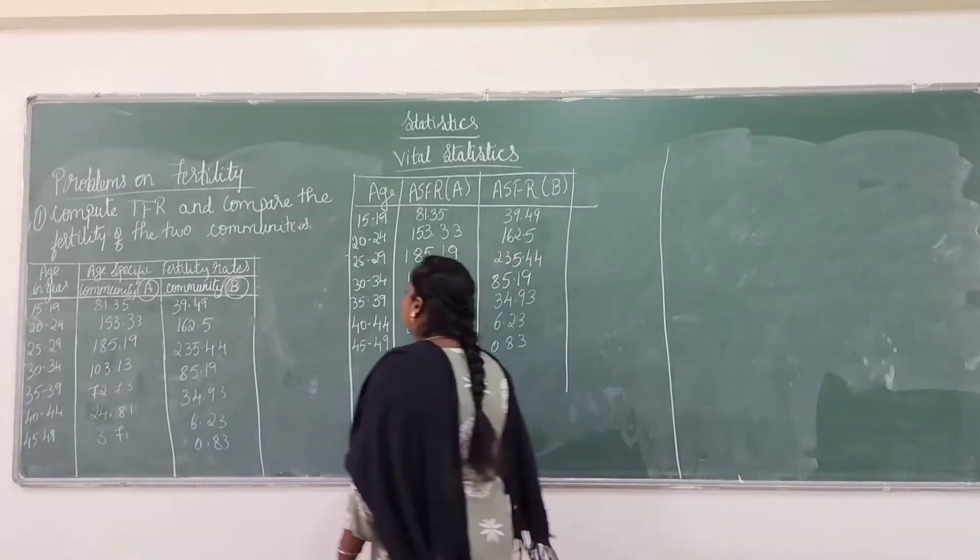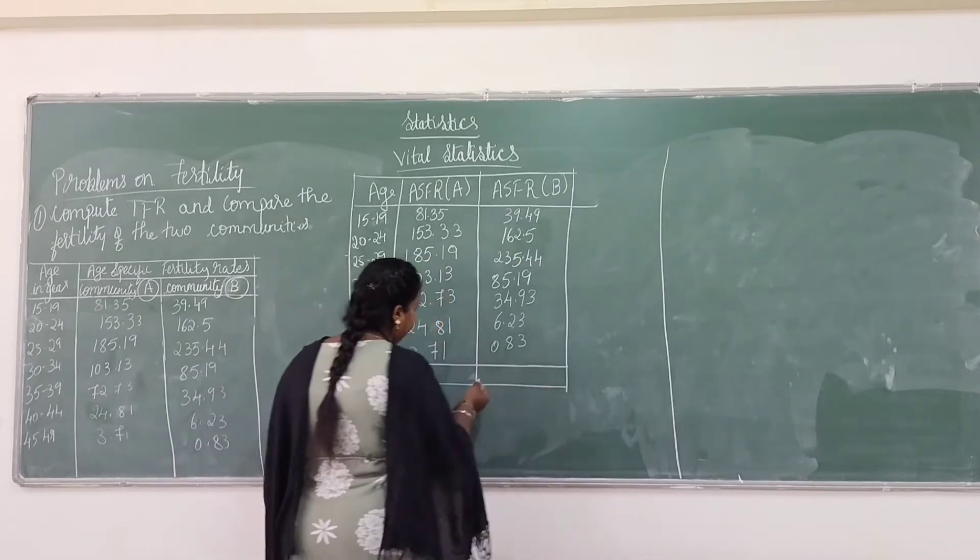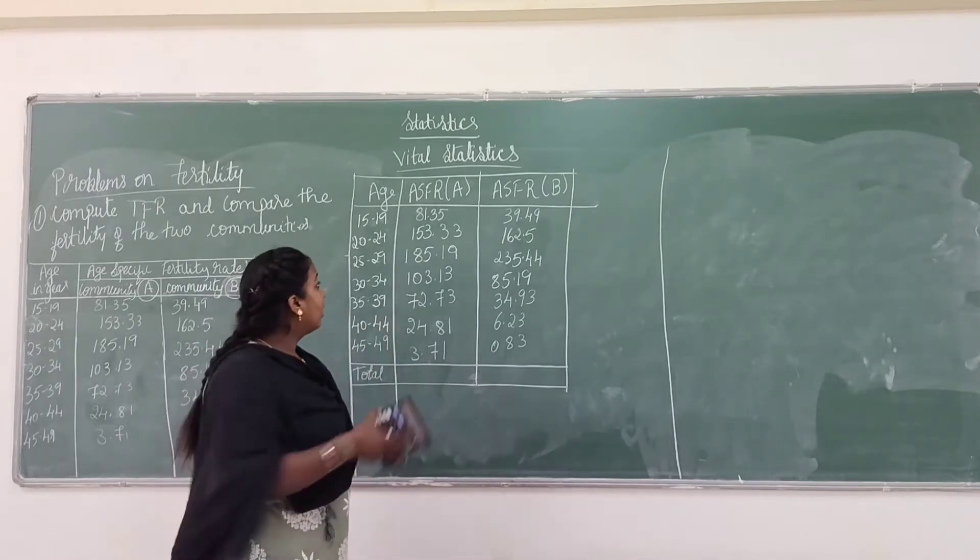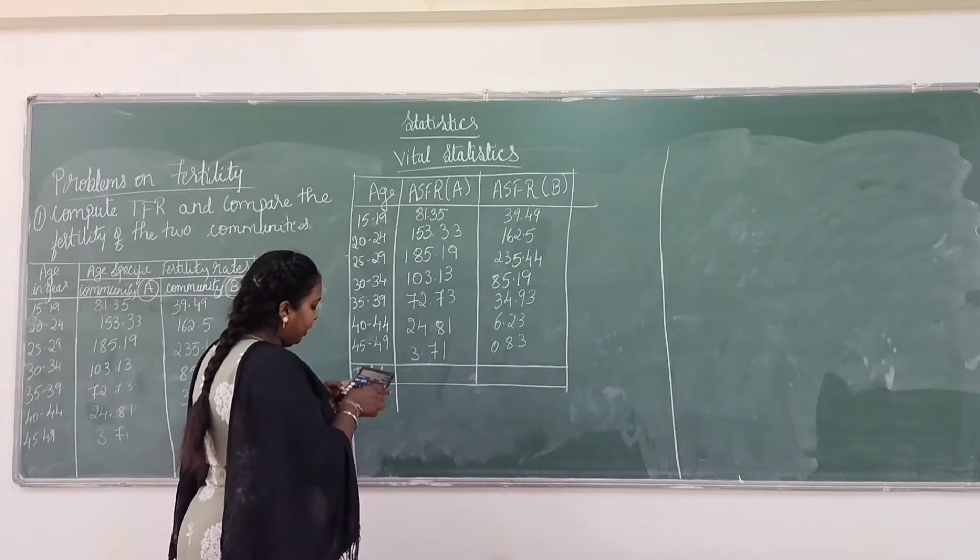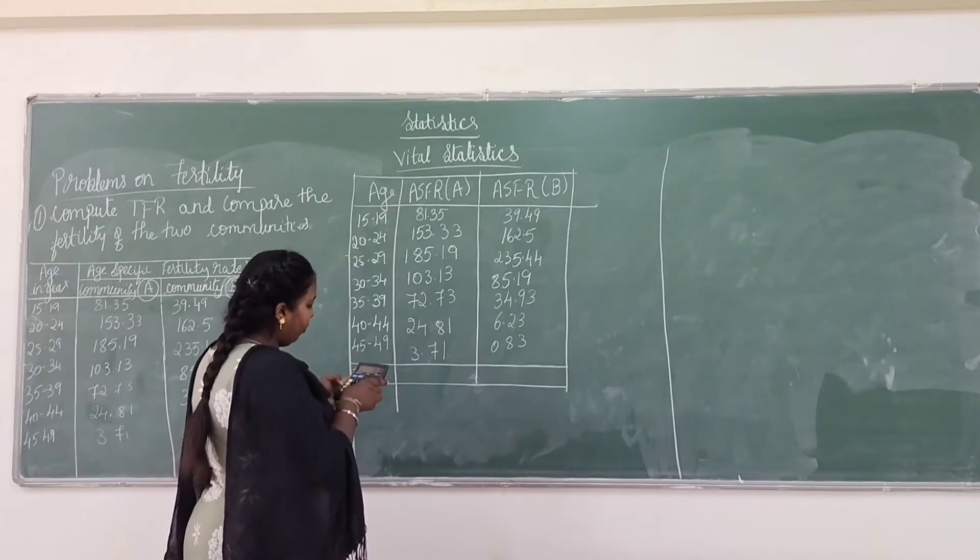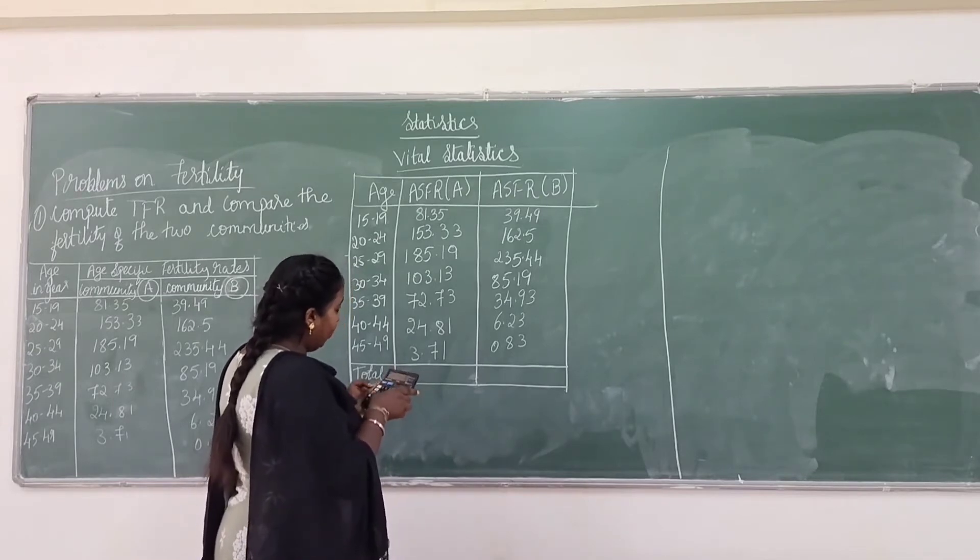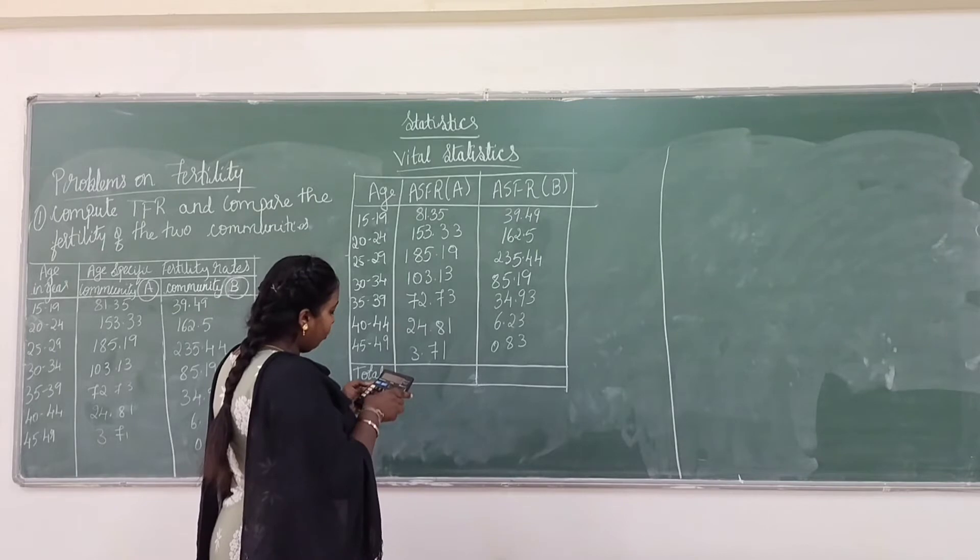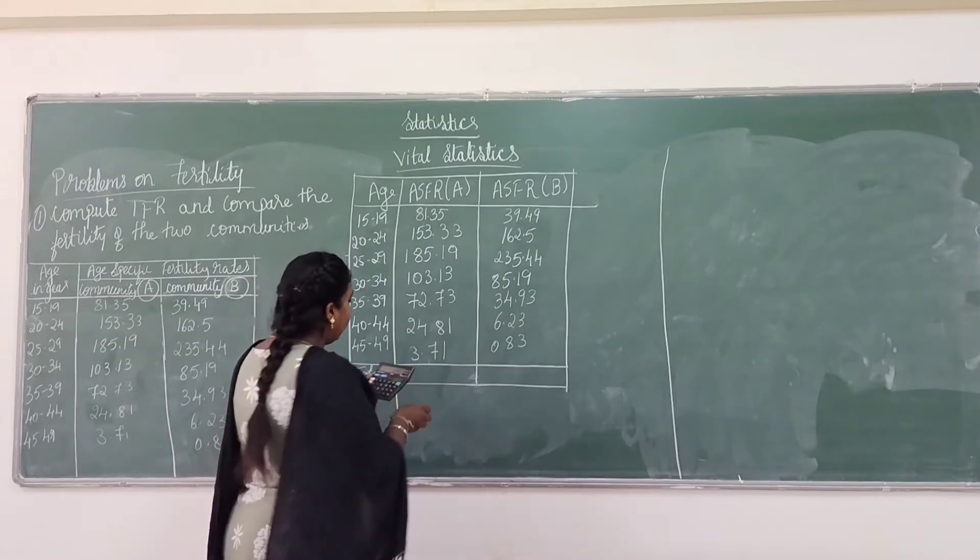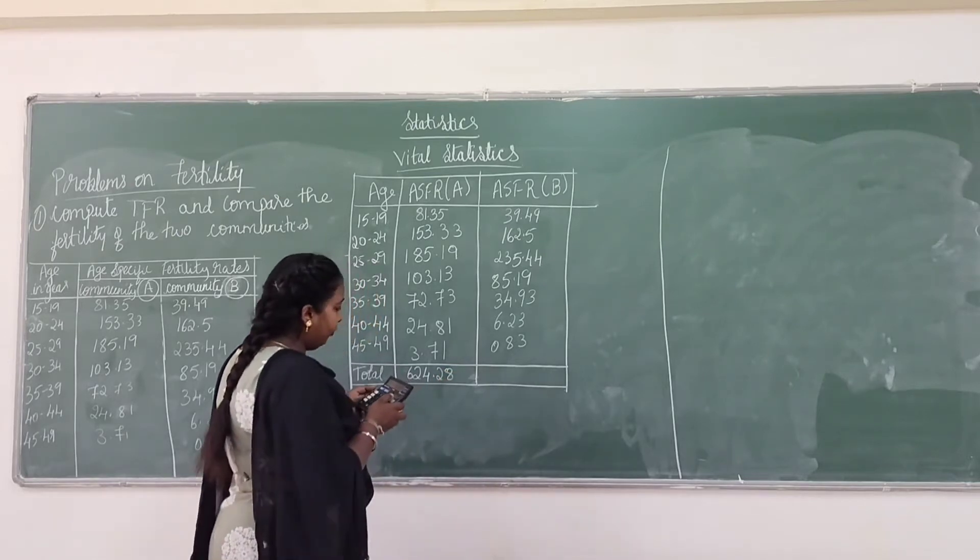The question directly gives us age-specific fertility rate. So the sum of ASFR for community A is 81.35 plus 153.33 plus 185.19 plus 103.13 plus 72.73 plus 24.81 plus 3.17, which equals 624.28.